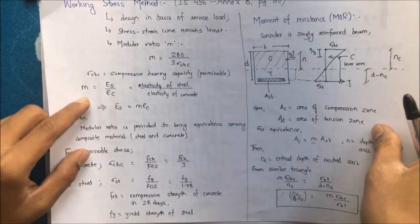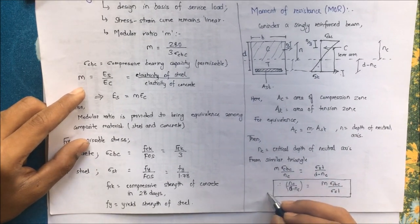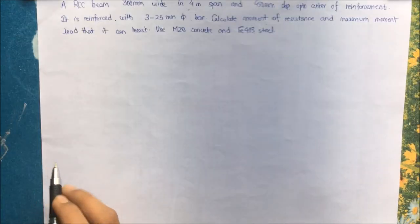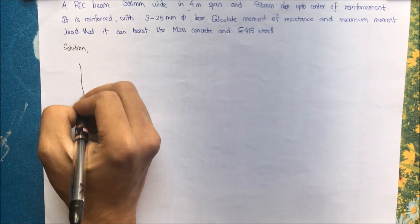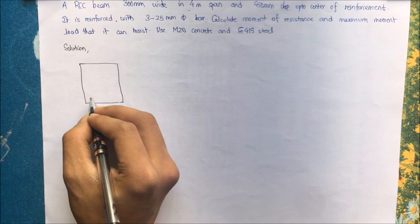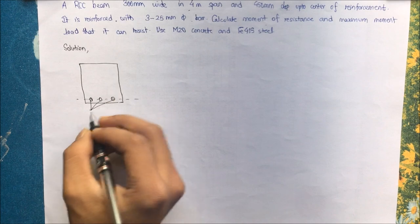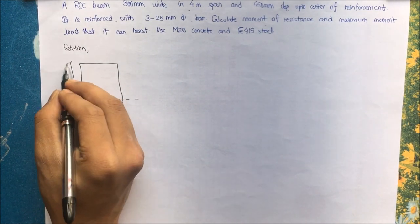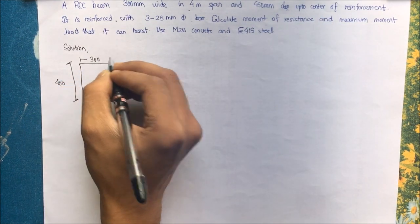We will be considering these formulas for calculating the moment of resistance. So let's start the solution. Let me draw the section of the beam. These are the steel provided, as we are told 3 number of 25mm bars. This is the depth up to the center of reinforcement 450mm, and 300 is the section width.